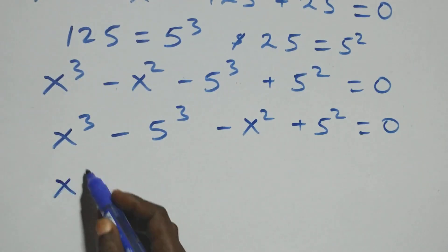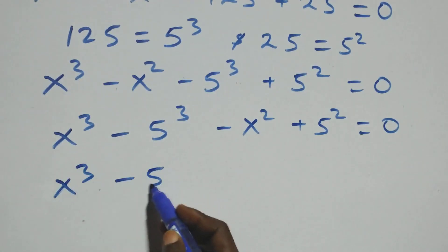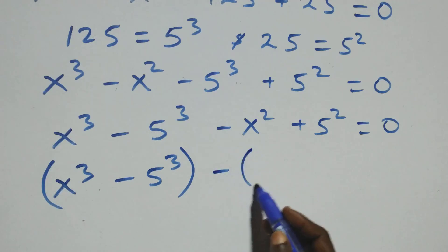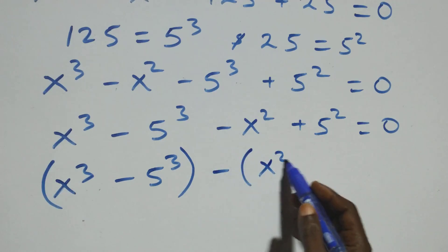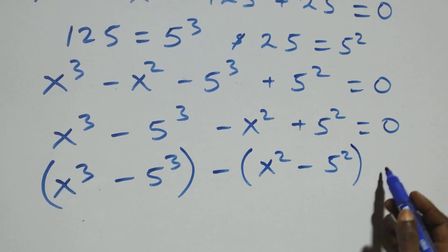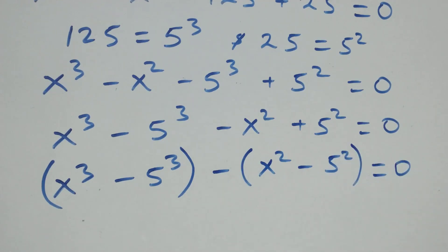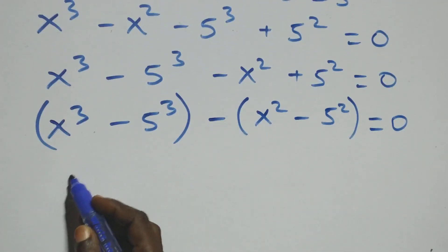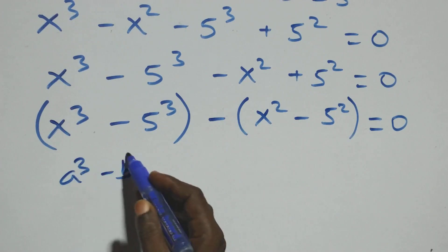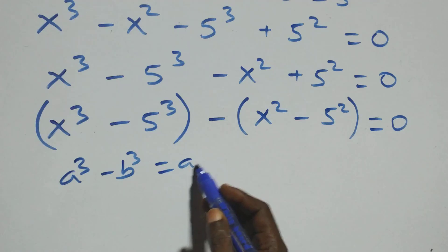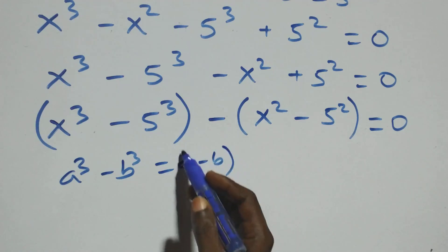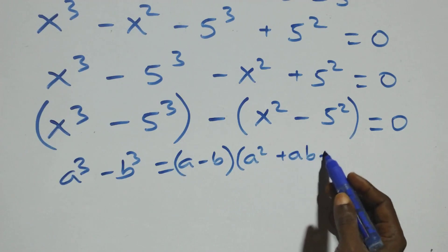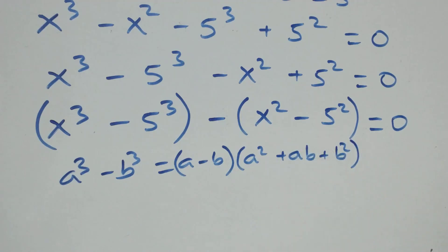We apply the algebraic identities. The first group follows the difference of cubes: a cubed minus b cubed equals (a minus b)(a squared plus ab plus b squared). The second group follows the difference of squares: a squared minus b squared equals (a minus b)(a plus b).